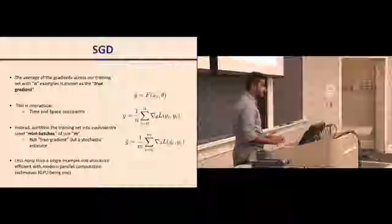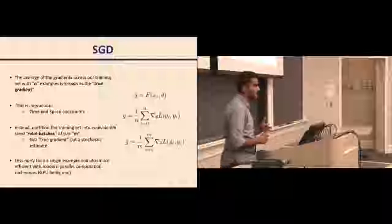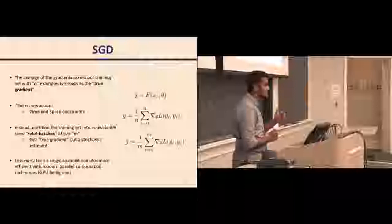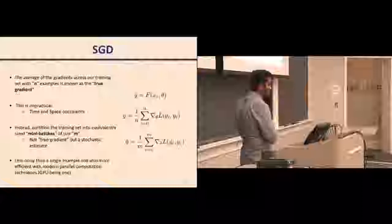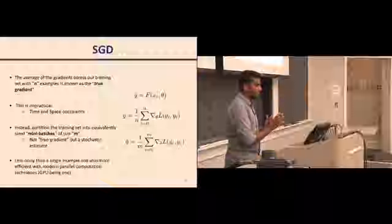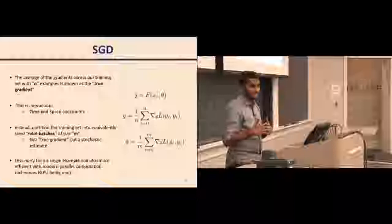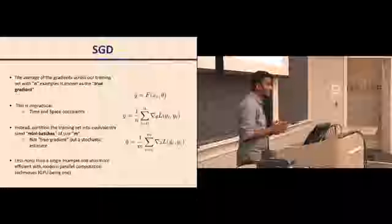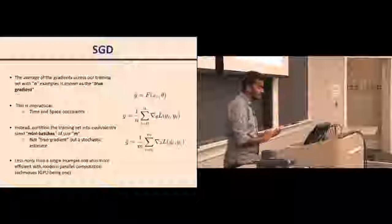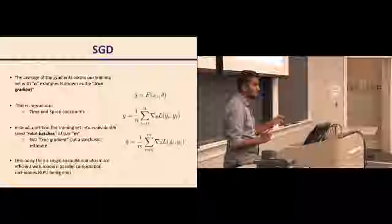Starting with different optimization techniques, let's start with SGD. What we have done so far in lectures is gradient descent. Assuming you have N samples in your training data, you feed all N samples together into your network, calculate the loss, calculate the gradients with respect to all training examples, divide the gradients by the total number of examples in your dataset, then backpropagate and update your weights. This is known as computing true gradients.